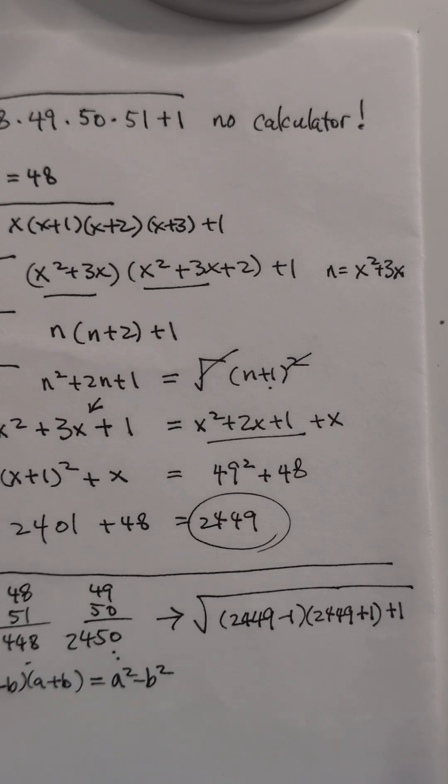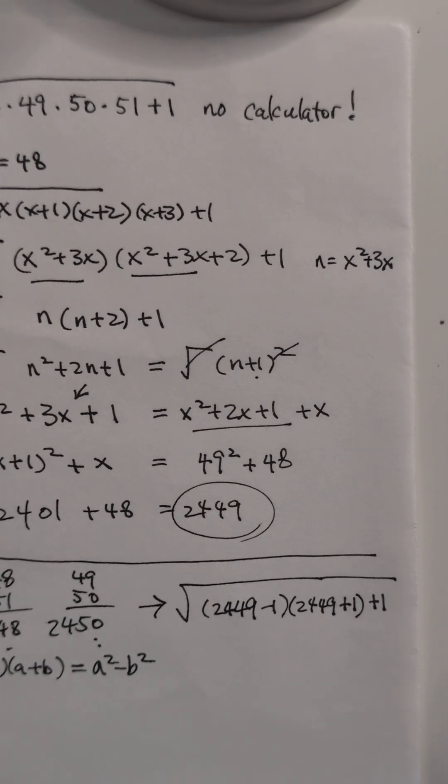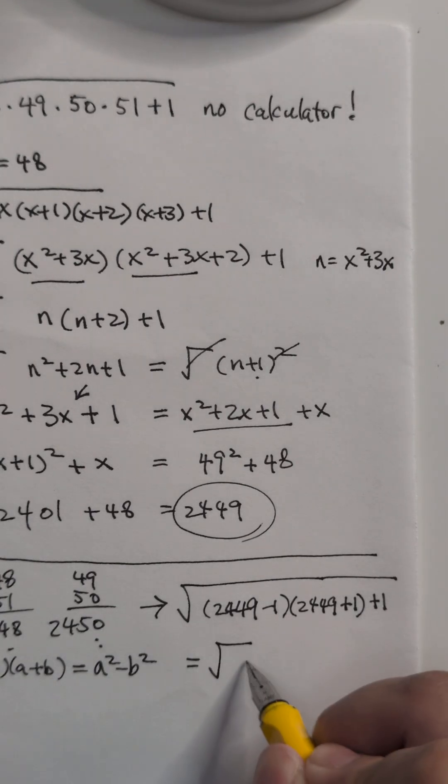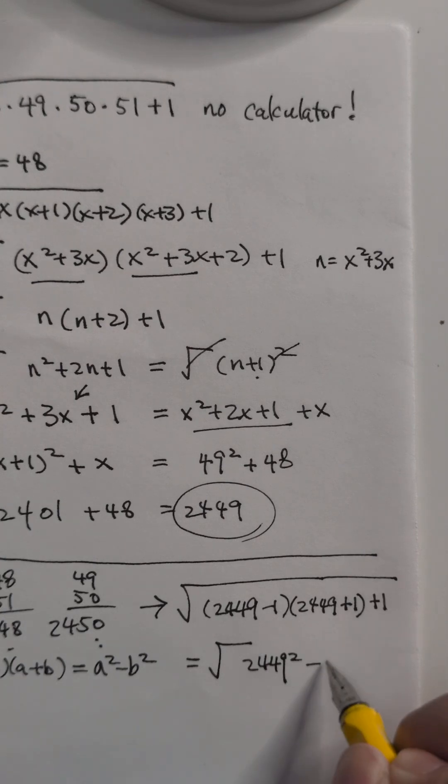So that's actually a usual trick a lot of people use with the minus 1. This will equal square root of 2449 squared minus 1 squared, right? Plus 1. What is 1 squared? 1 squared is 1, plus 1 is 0.